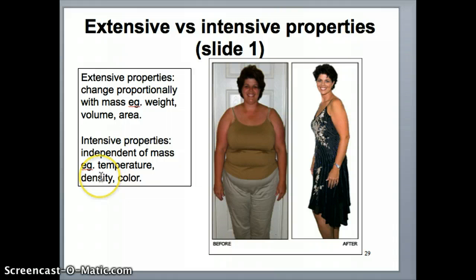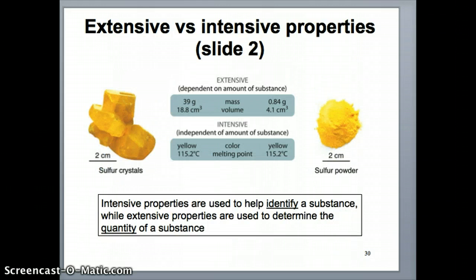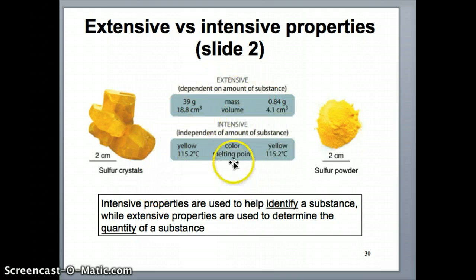Density is another intensive property. If you have one gram of gold versus ten grams or one kilogram of gold, you're going to have the exact same density. If it's gold, it's going to have that same density value — it's not going to change. Let's look at an actual example of extensive versus intensive property.